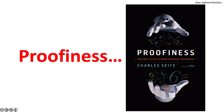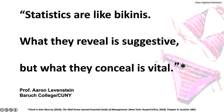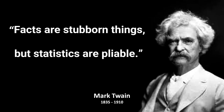Charles Seife, an NYU professor of journalism, wrote a book on mathematical deception called Proofiness. Seife wrote: 'Proofiness is using numbers to prove what you know in your heart is true, even when you know it's not. Numbers have a particular ability to fool us — it's using that ability to turn nonsense into something believable.' Professor Aaron Levinson of Baruch College cautioned: 'Statistics are like bikinis. What they reveal is suggestive, but what they conceal is vital.' Mark Twain noted: 'Facts are stubborn things, but statistics are pliable.'